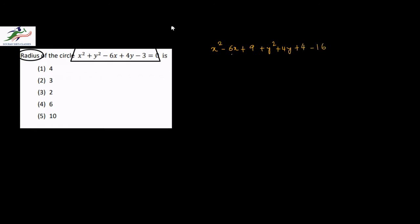Now why did I do this? Because from 6x I know that I can write this as 2 into 3 into x. So x is one term and 3 is the other term, so I have to get a 3 squared here, which is why I brought in plus 9. Similarly, 4y is 2 into 2 into y — I have y here and I need a 2 squared, so that is why I brought in plus 4.